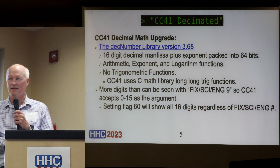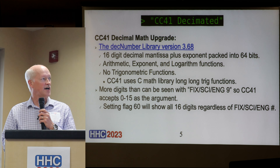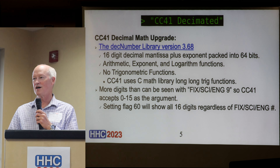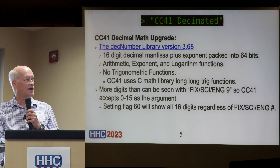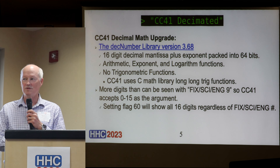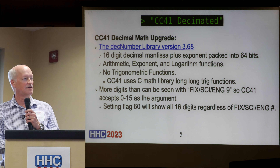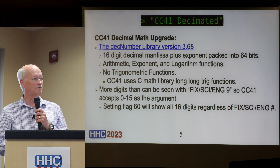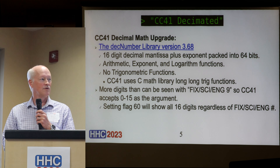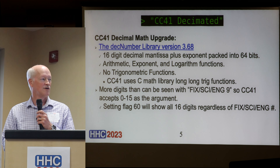The decimal math library upgrade uses DEC number, which is widely used and open source. It manages to pack 16-digit decimal into 64 bits along with signs and exponents, which is pretty amazing. It has arithmetic, exponent, and logarithm functions, but no trig — so CC41 uses the C math library long double trig functions. With 16 digits, that's more than you can see with FIX 0 through 9, so it accepts FIX 0 through 15. Setting flag 60 will show all the digits.